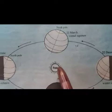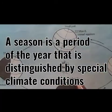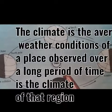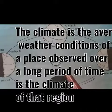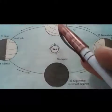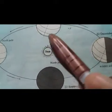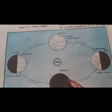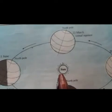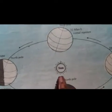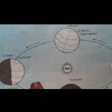What is a season? A season is a period of the year that is distinguished by special climate conditions. And what is climate? The climate is the average weather conditions of a place observed over a long period of time. At a particular period of time we experience climate changes, and these periods of climate changes are called seasons. Since childhood we experience summers, rainy seasons, and winters. But when we talk about the seasons on the whole surface of the Earth, there are two major types: summers and winters.